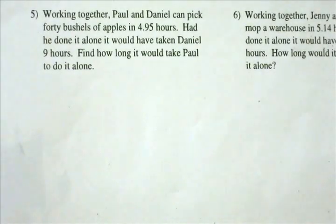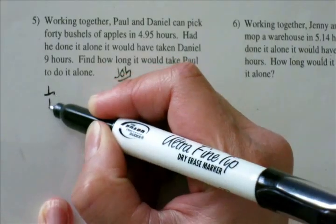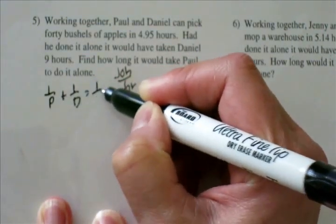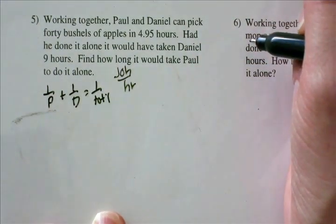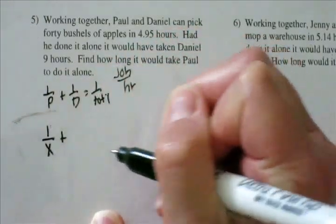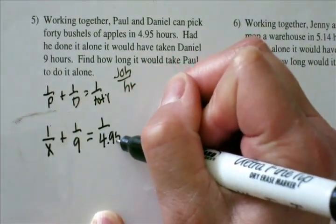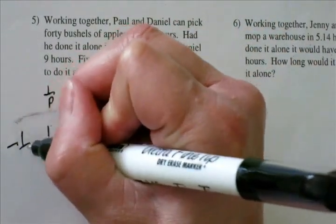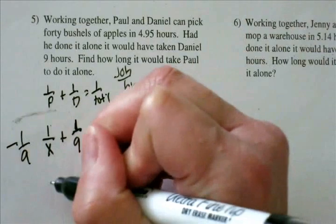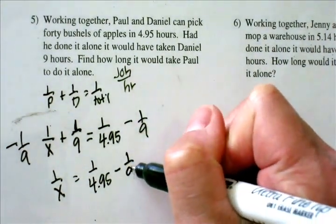Problem 5: Working together, Paul and Daniel can pick 40 bushels of apples in 4.95 hours. Had he done it alone, it would have taken Daniel 9 hours. Find out how long it would take Paul to do it alone. So: 1 over what Paul can do, plus 1 over what Daniel can do, equals 1 over total time. We don't know how long it takes Paul, so that's 1 over x. Plus Daniel can do it in 9 hours. Together they do it in 4.95 hours. To solve for x, subtract 1 over 9 from each side, giving 1 over x equals 1 over 4.95 minus 1 over 9.